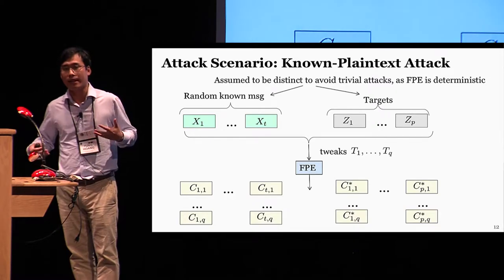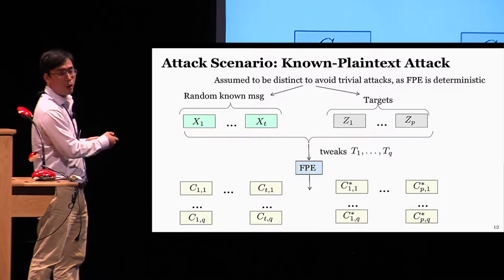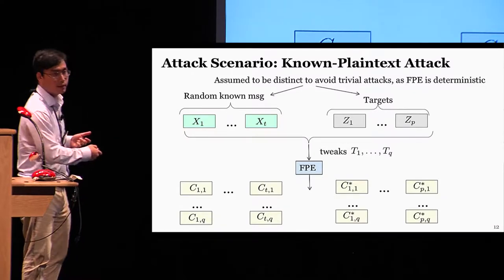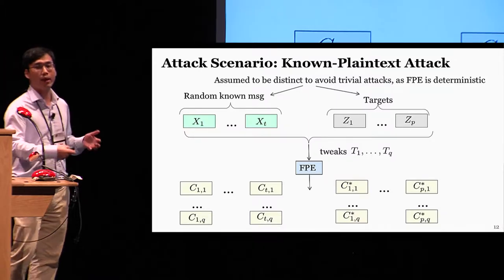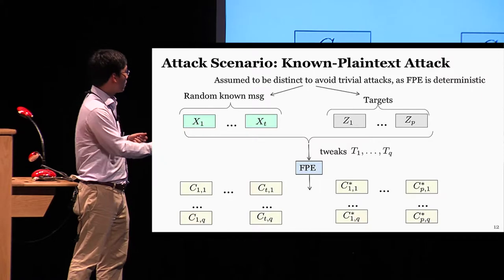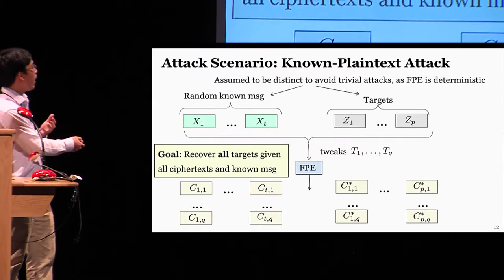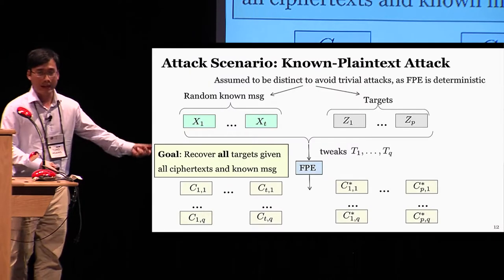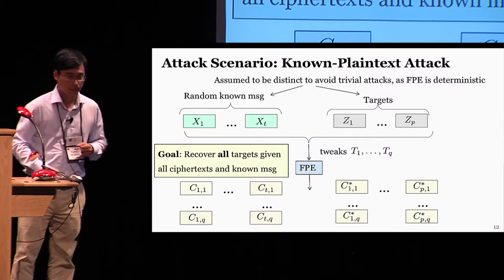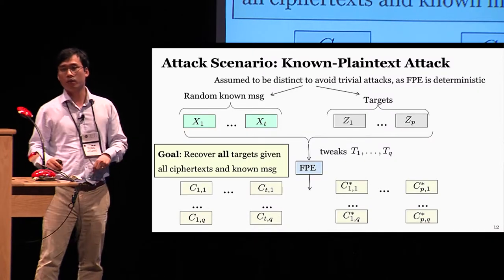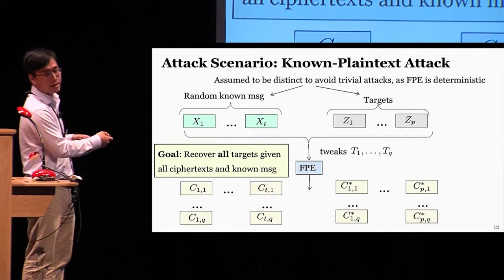Recall that our attack is a known plaintext attack, meaning that we are given some random known messages X1 to XT together with their ciphertexts under Q tweaks T1 to TQ. Our goal here is to recover all the unknown targets Z1 to ZP given just their ciphertexts under the same tweaks as before. Because FPE is deterministic, to rule out trivial attacks, I will assume that the known messages and the targets are distinct.